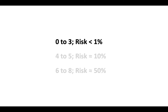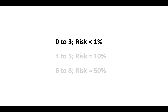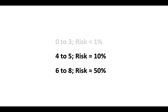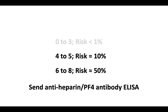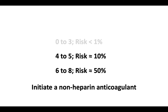In low-risk patients, no further diagnostic testing is needed — look for alternate causes of thrombocytopenia. In patients with a moderate or high pretest probability, send an anti-heparin PF4 antibody ELISA assay and, without waiting for test results, initiate a non-heparin anticoagulant. Initiating a non-heparin anticoagulant should not be delayed for laboratory testing.